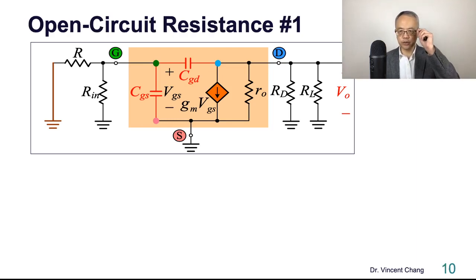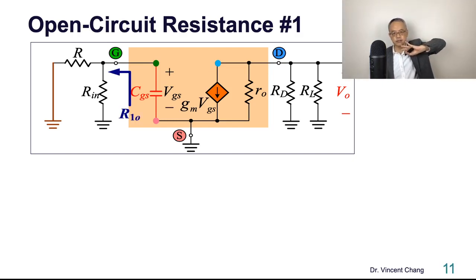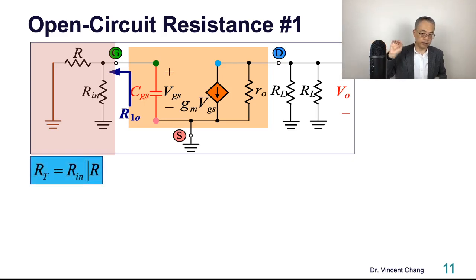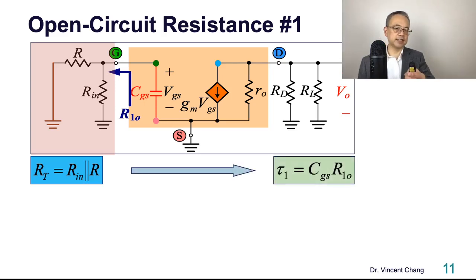So first, let's try to get R1O. So R1O means what? You let C2 open, you open circuit the rest of the capacitance, and you grab the two terminals of C1, which is in this case CGS. So what do you see? This is easy, right? The parallel combination between R and R1. Let's just rename the parallel combination of these two as RT. So this is easy. The first time constant you got it: C1 R1O, so CGS times RT. Easy, right?